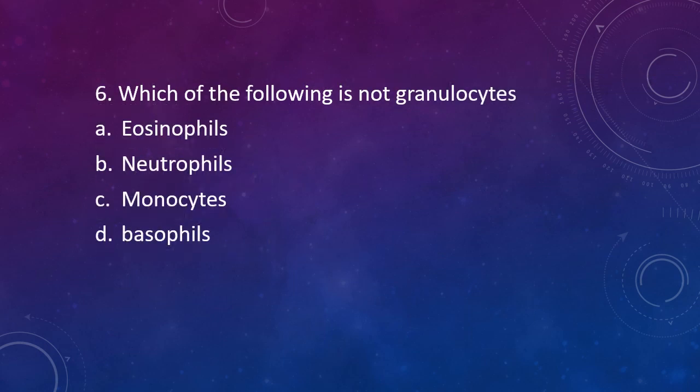Question 6. Which of the following is not a granulocyte? Eosinophil, neutrophil, monocytes, or basophil. The correct answer is Option C. Monocyte is not a granulocyte.